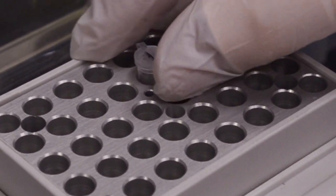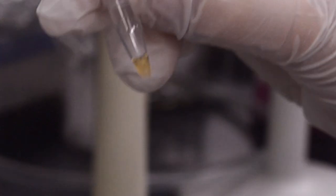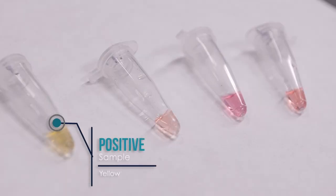Remove the sample from the heat block and observe the color. A yellow sample shows a positive result, while orange and pink show negative.